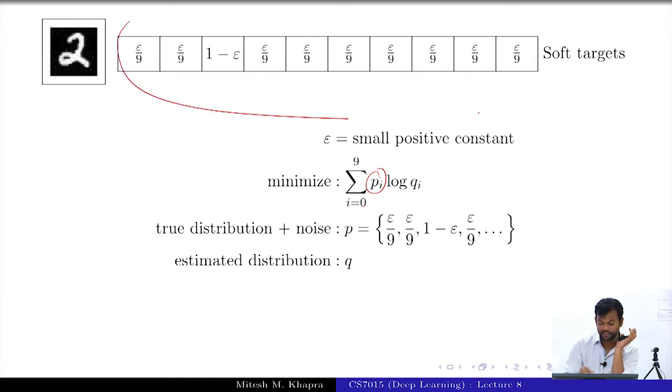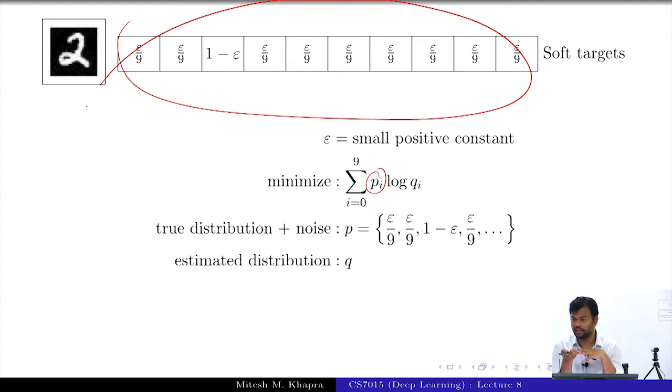Now, if I am giving it this information, then I am not allowing it to overfit on the training data, right, because now with this distribution, this quantity will not get minimized when Q_i is equal to the one-hot distribution where all the mass is on 2. Do you get that? So, in some sense we are making sure that now if it tries to overfit on the training data, it will not get the minimized error, right.